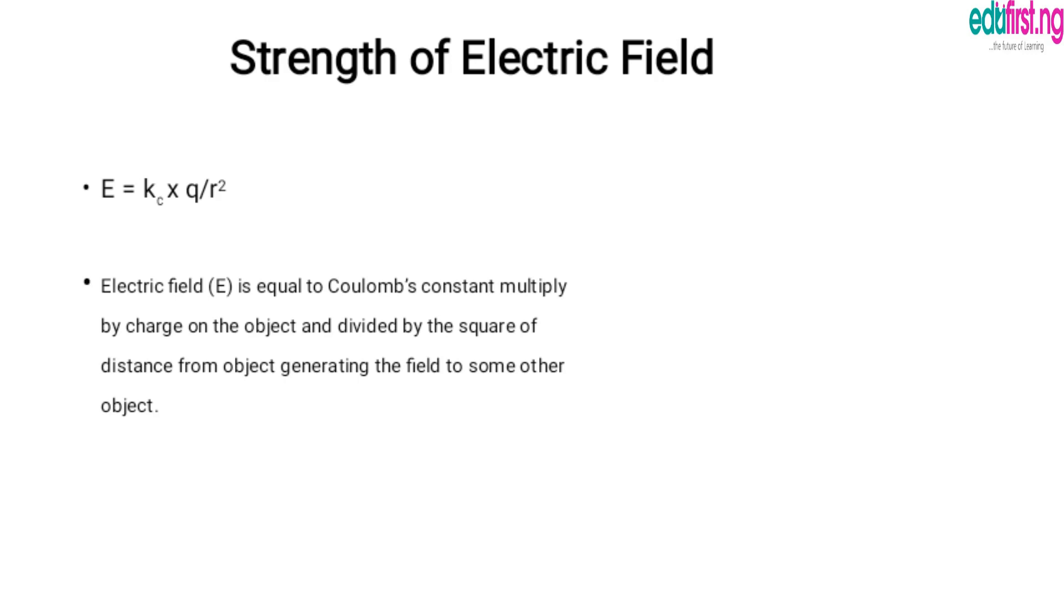Now let's look into strength of electric field. The electric field strength is given to be E equals ke multiplied by q all over r squared. What this mathematical expression means is the electric field strength E is equal to Coulomb's constant multiplied by charge on the object and divided by the square of distance from object generating the field to some other object.